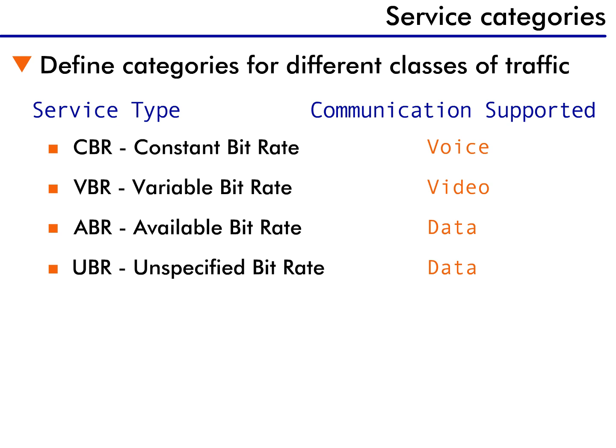Service categories are used to define the different categories for different classes of traffic. There are four basic categories. First is constant bitrate, or CBR. This category has the highest priority and, as the name implies, it's defined to support traffic requiring a constant bitrate.